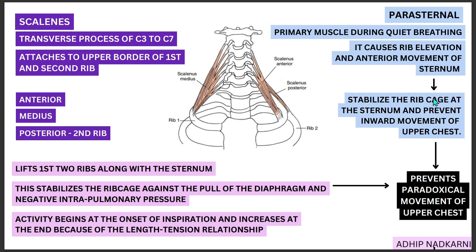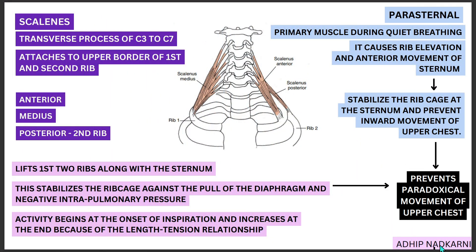The scalenes stabilize the rib cage at the sternum and prevent the inward movement of the upper chest. This is called prevention of paradoxical movement of the upper chest — 'paradoxical' meaning exactly the opposite of what should happen. When we breathe, our chest should not go inward; it has to stay stable so the diaphragm can pull air in. This paradoxical inward movement is prevented by the scalene and parasternal muscles. Together, the three primary muscles work as a unit: the diaphragm pulls while the scalenes and parasternal stabilize the rib cage so that breathing can occur efficiently.